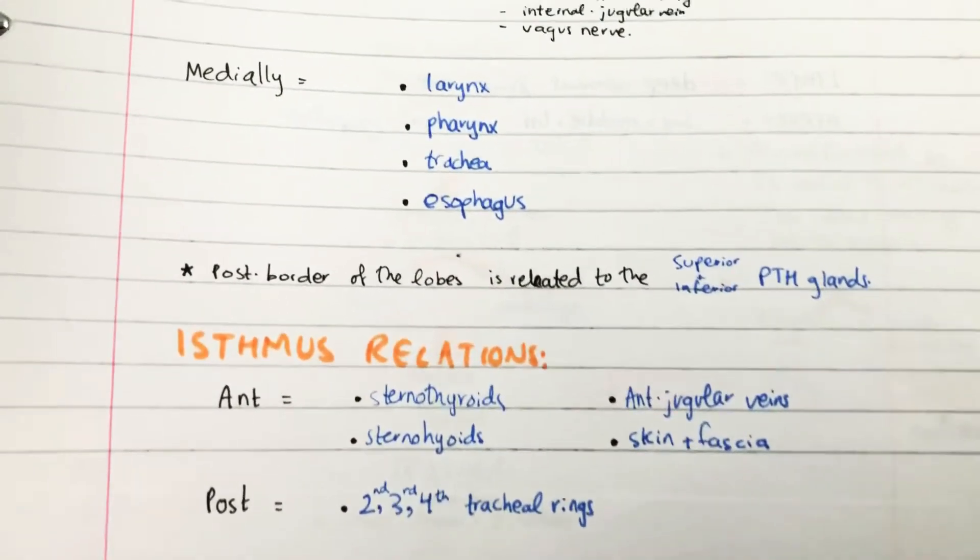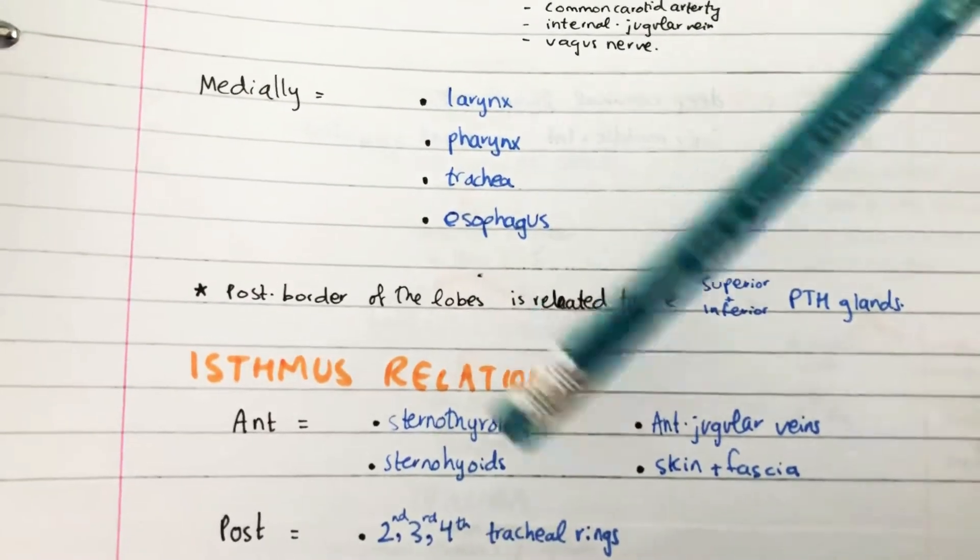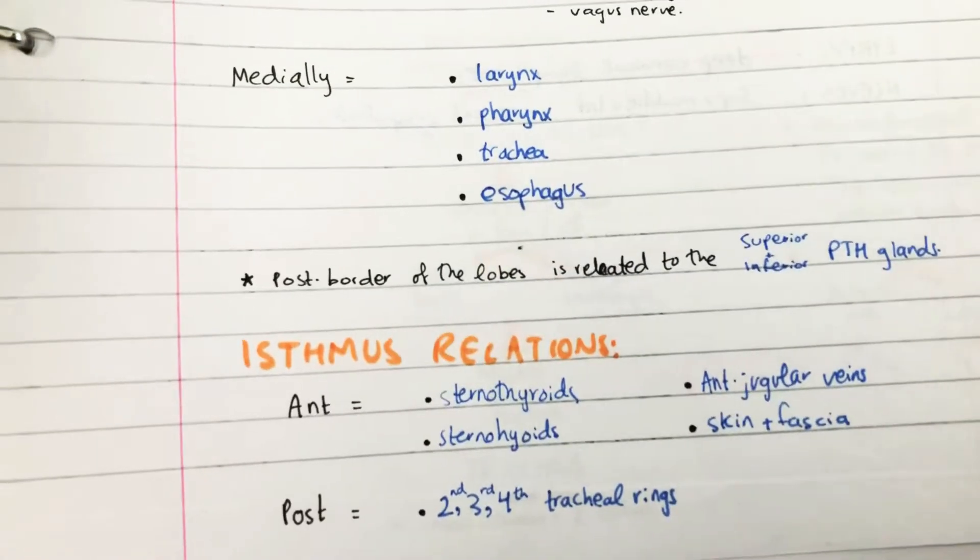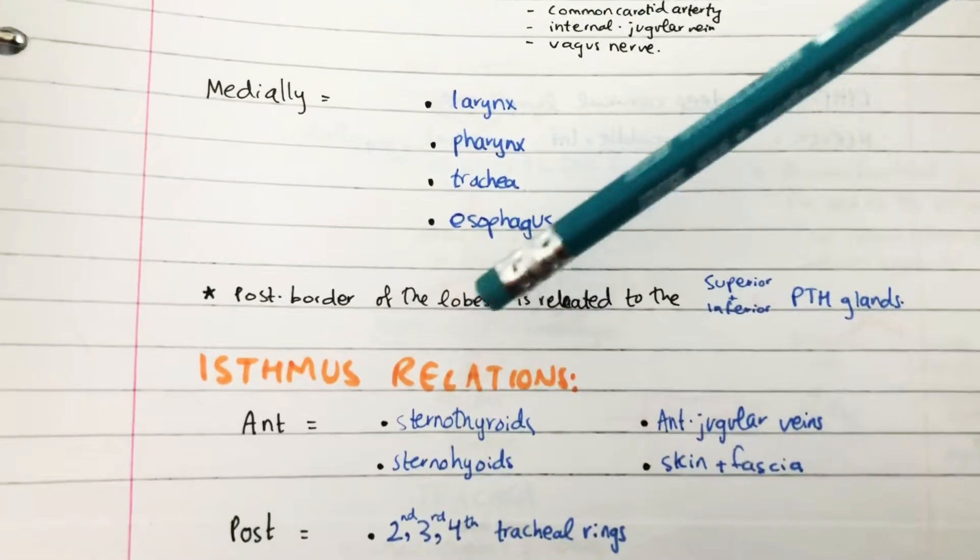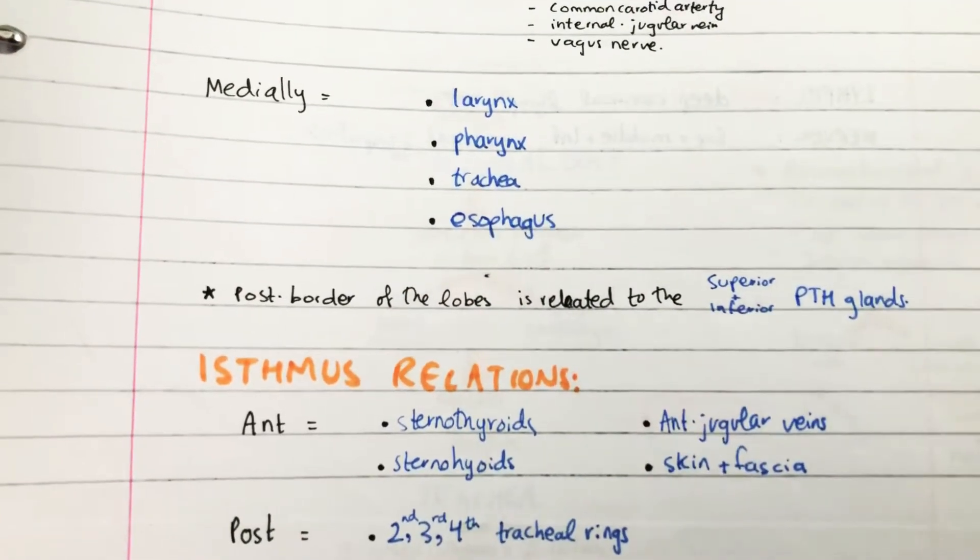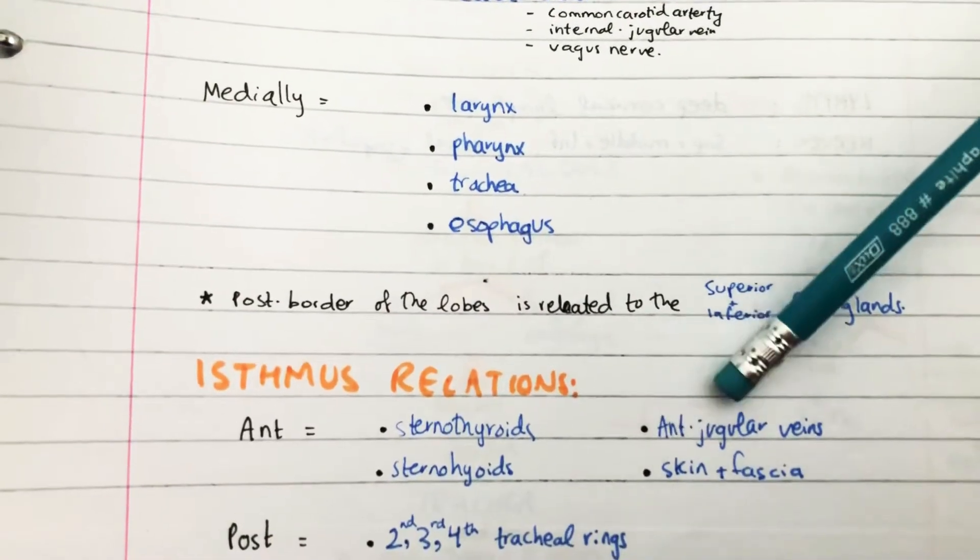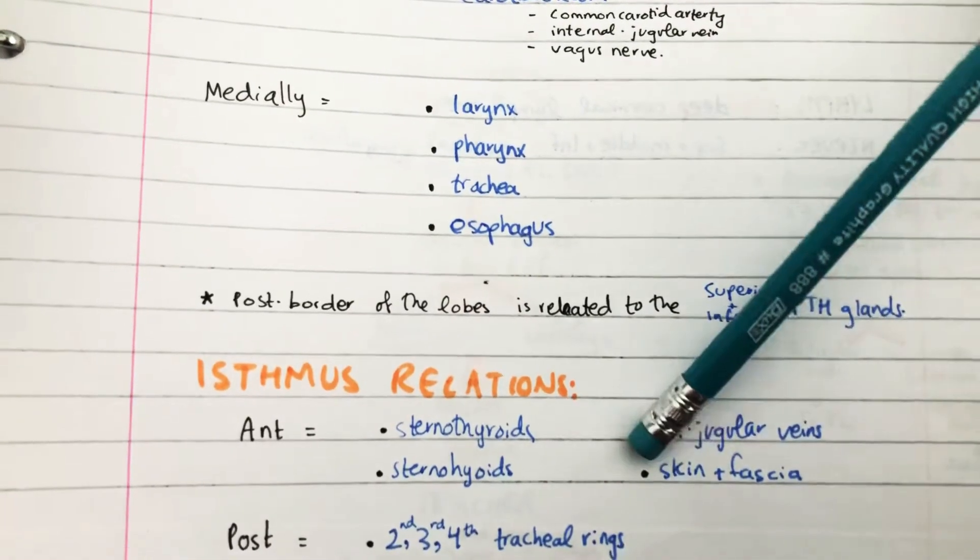Then the relationships of the isthmus are also kind of important. The anterior relationships are the sternothyroid, the sternohyoids, and the anterior jugular veins and the skin and fascia.